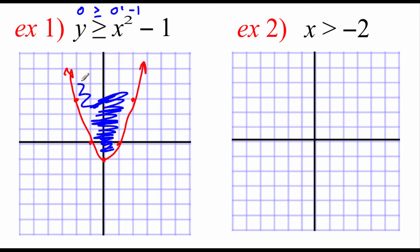The test point was located above the line we drew in. So the solution to this inequality is all of the points that are above our parabola line.